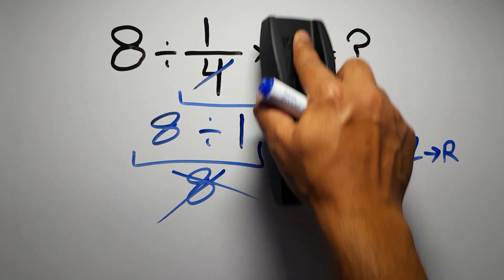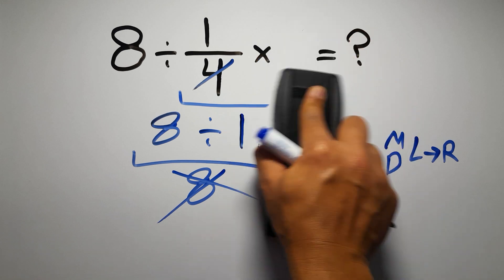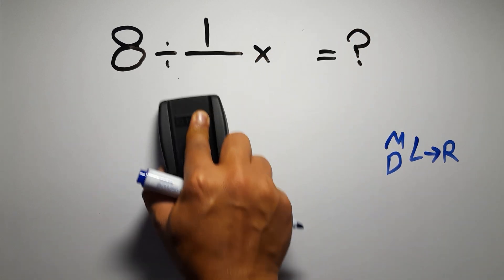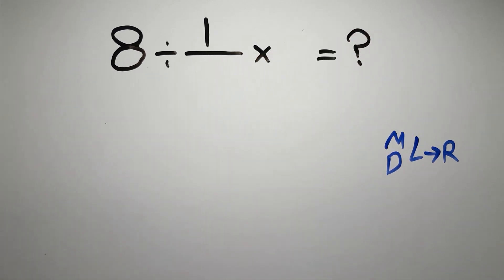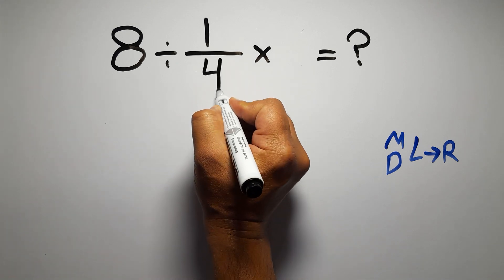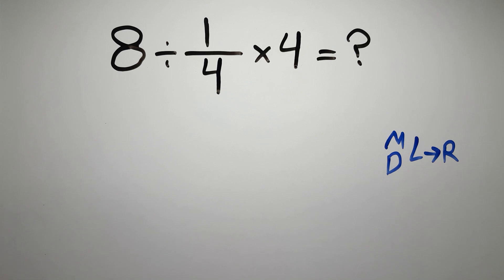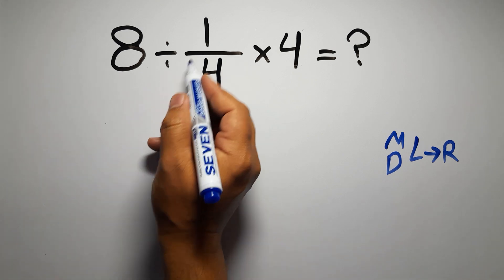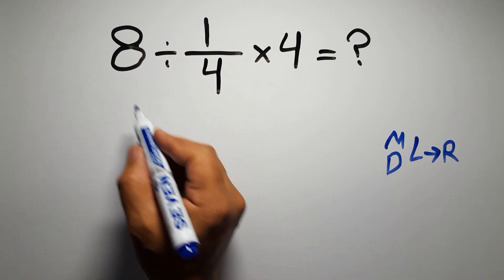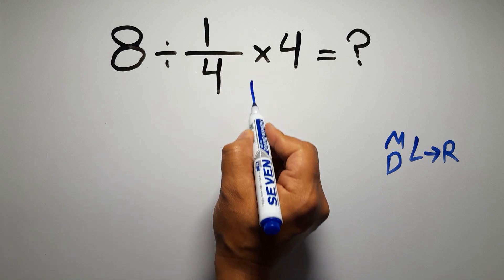So first we have to do this division: 8 divided by 1 over 4.